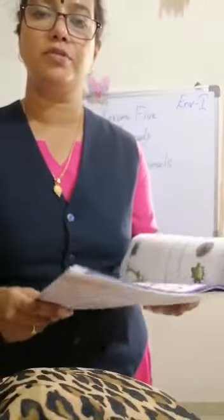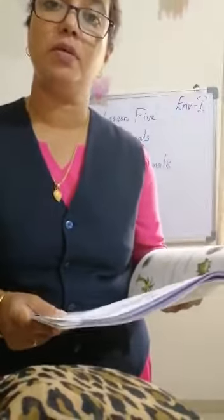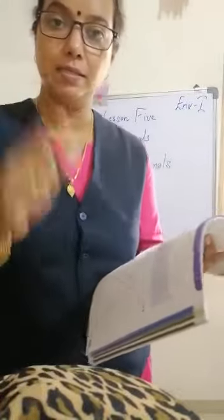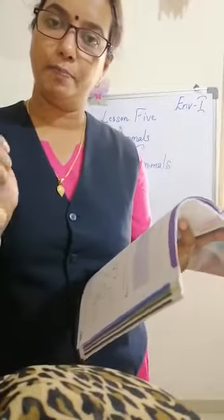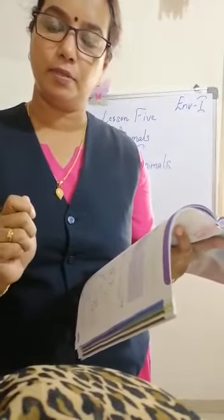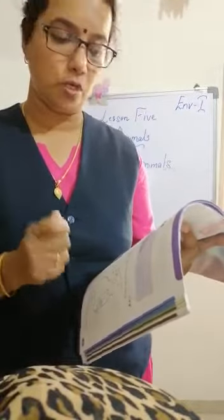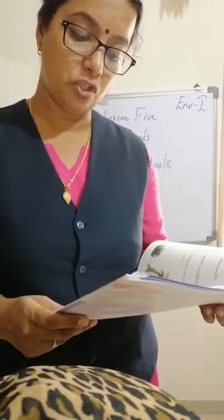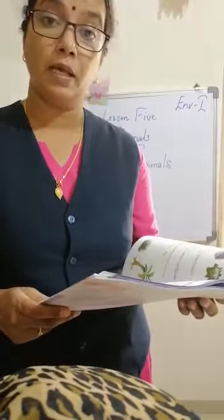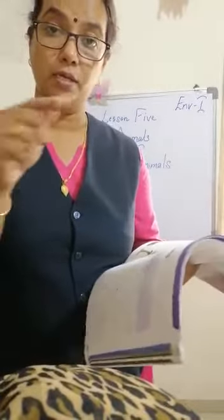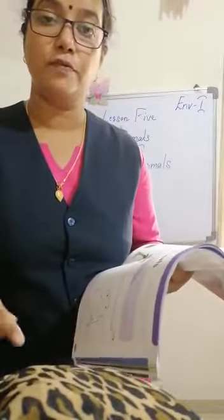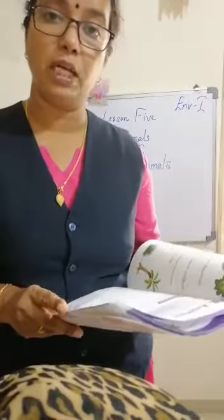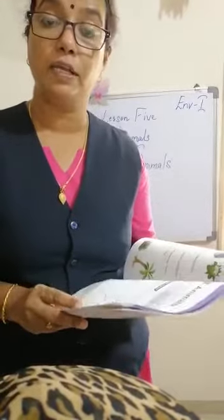Good morning, my children. Today we are going to start with a new lesson — lesson number five. Take your pencils and textbooks when you watch this video. Join the dots and color the pictures of animals. You have to join the dots, color the picture, then fill in the missing letters to form the names of the animals.